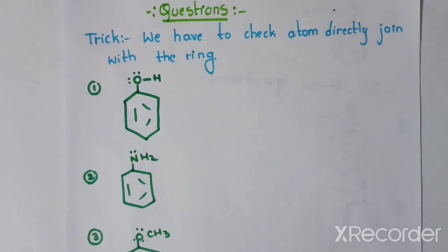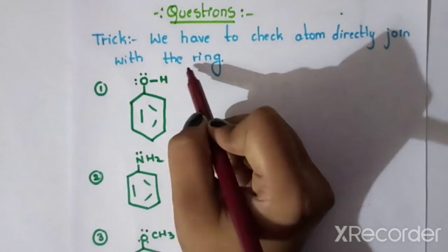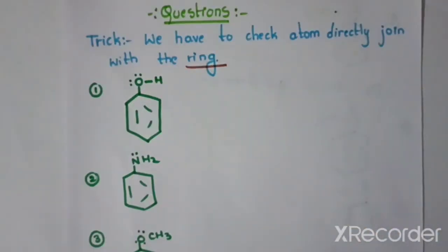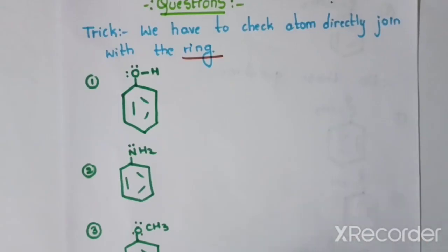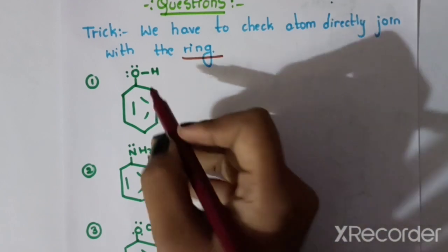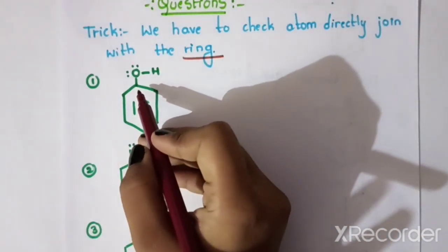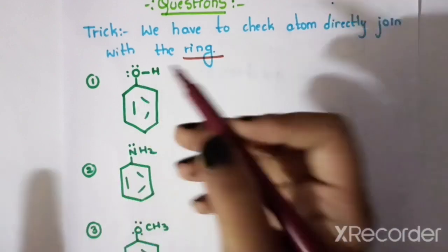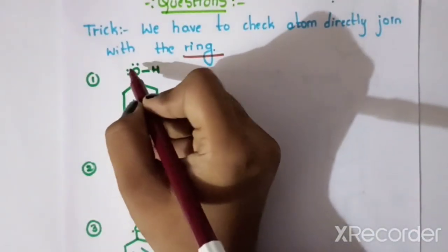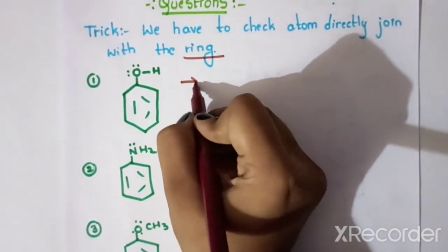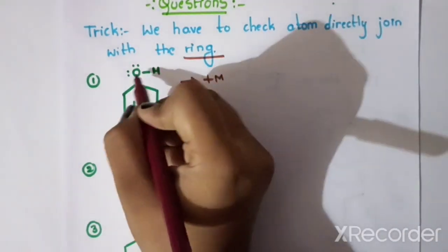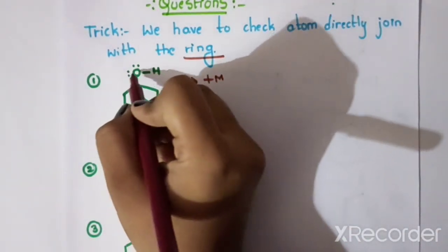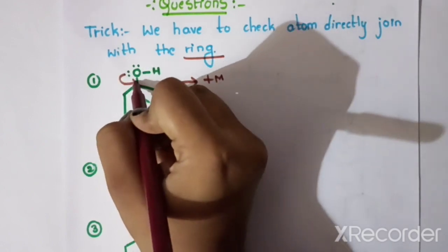How to solve the questions: if we have a ring with attached atoms, the atom must be directly joined with the ring. You will have to check the ring. Here we have a lone pair of electrons — this is the plus M effect. The electrons are donated to the conjugated system.